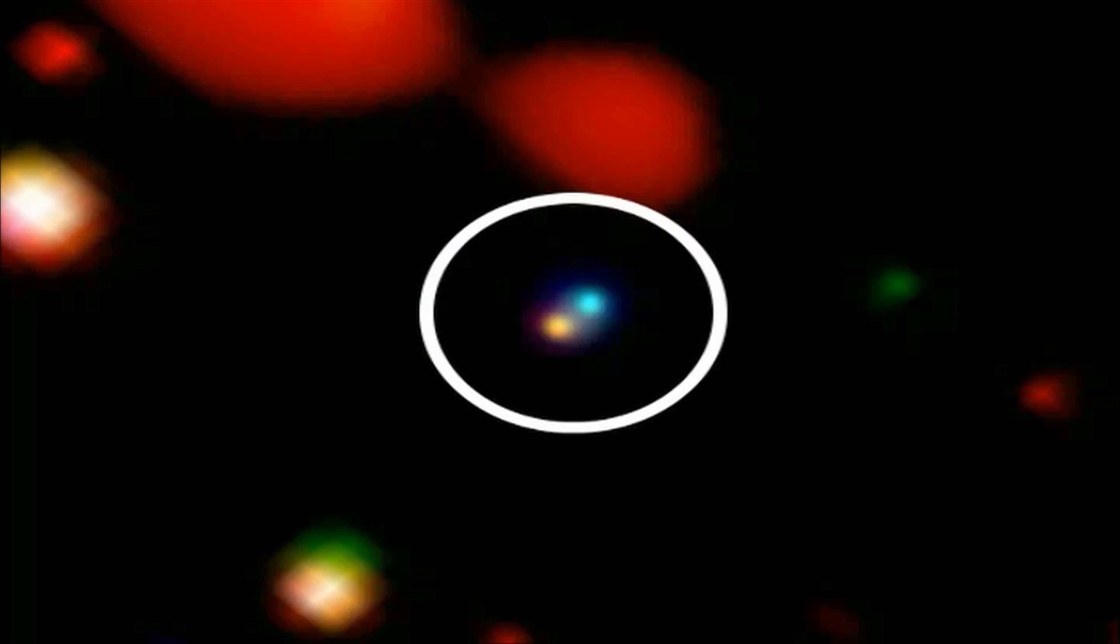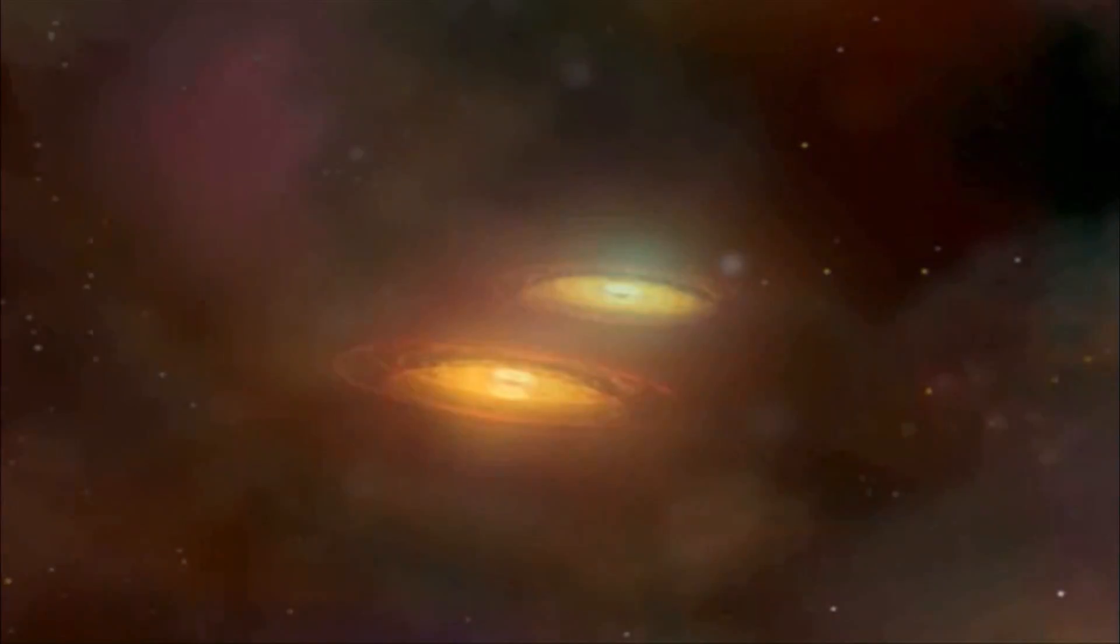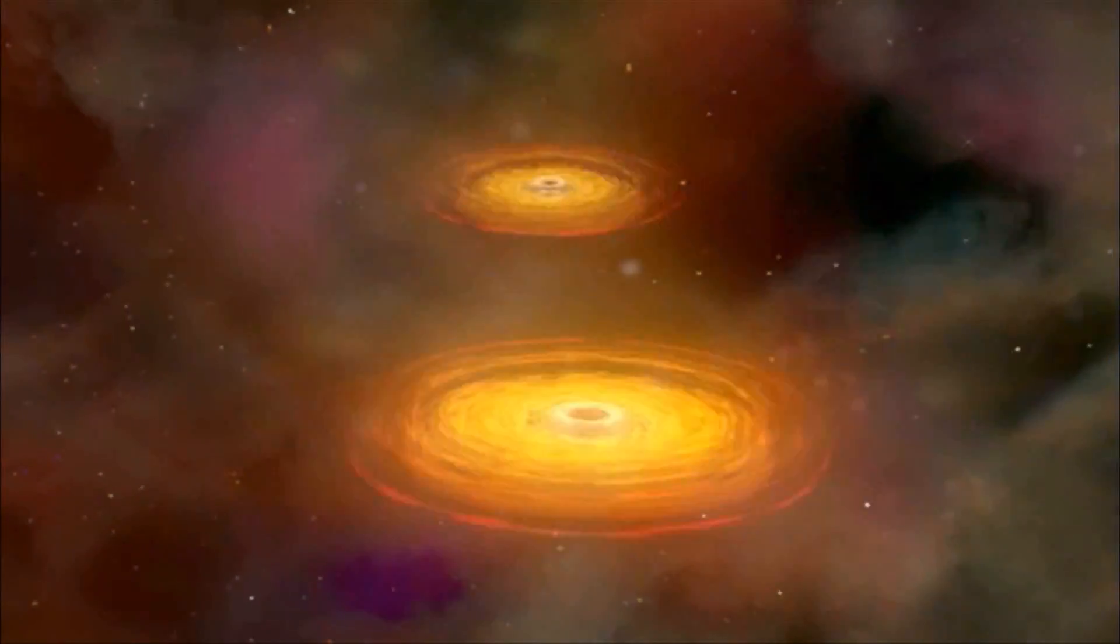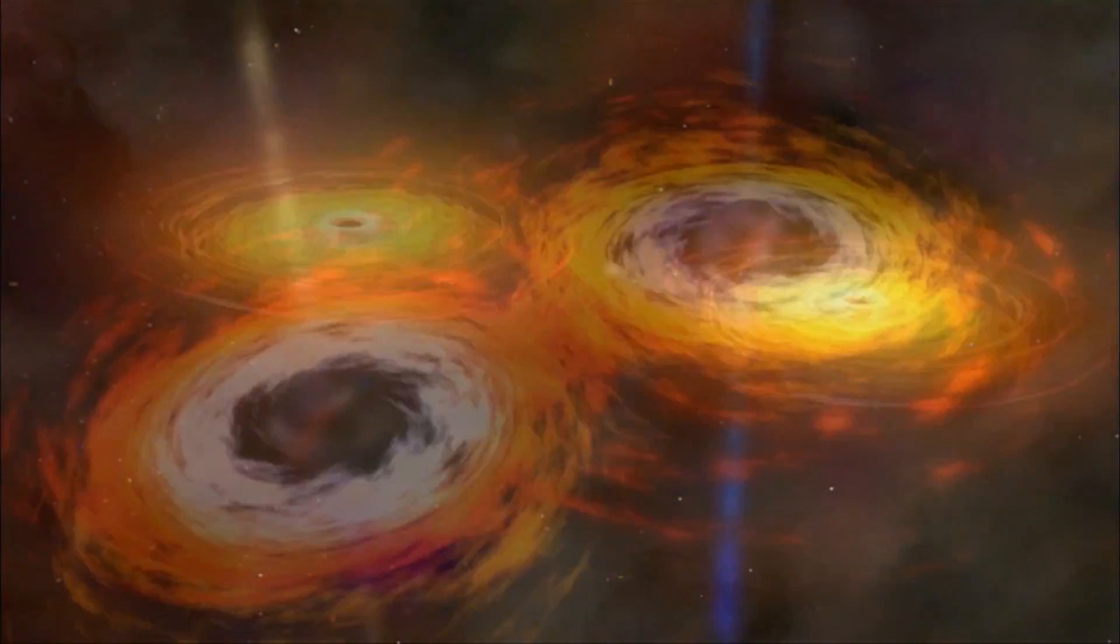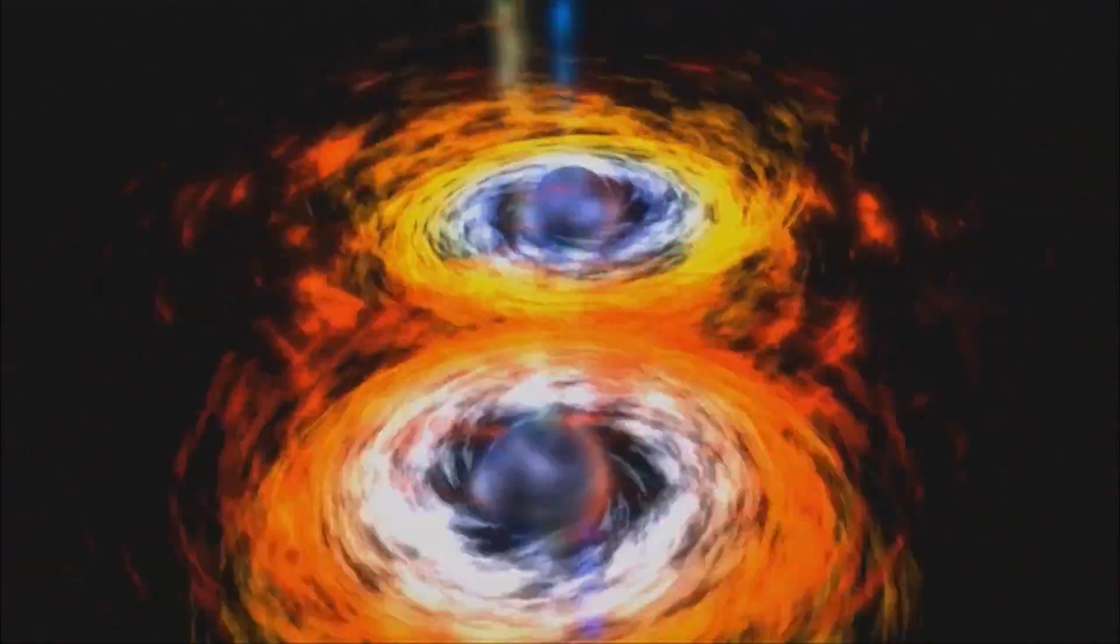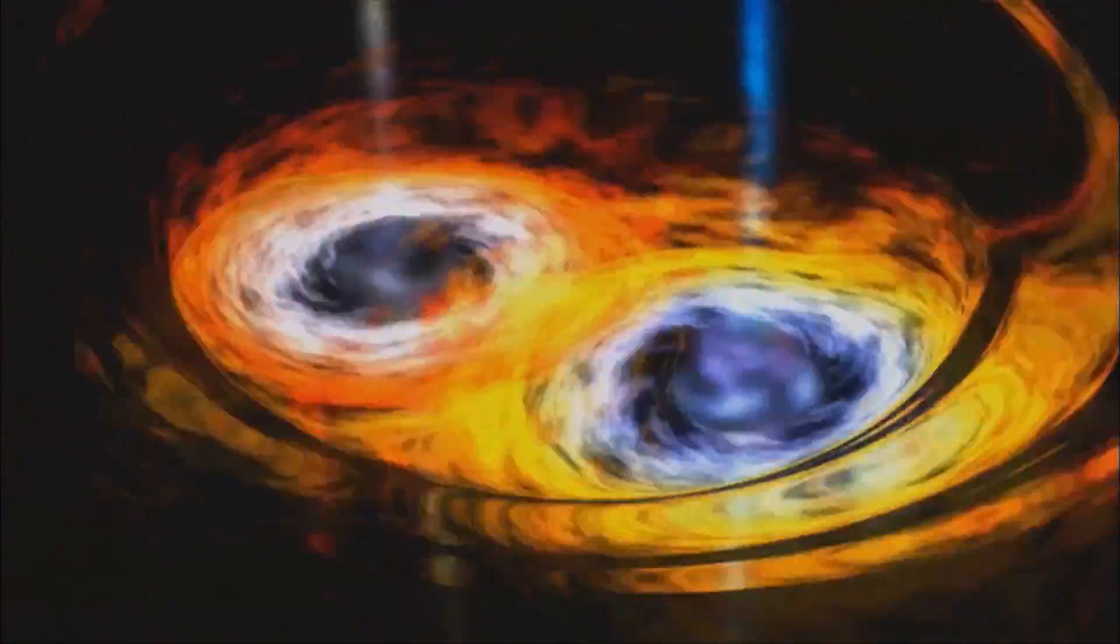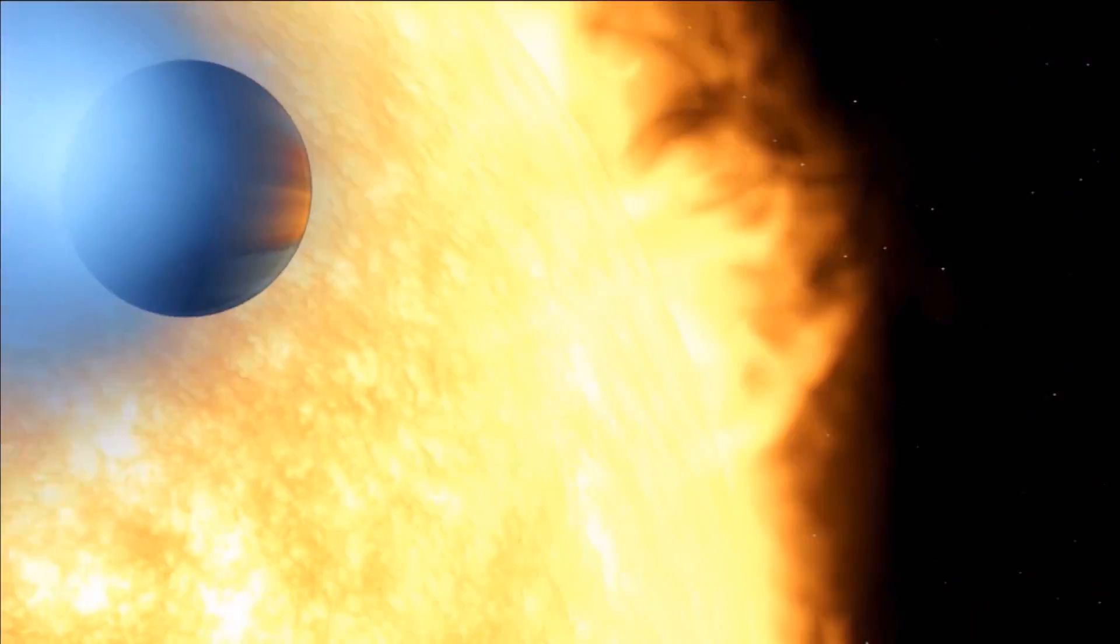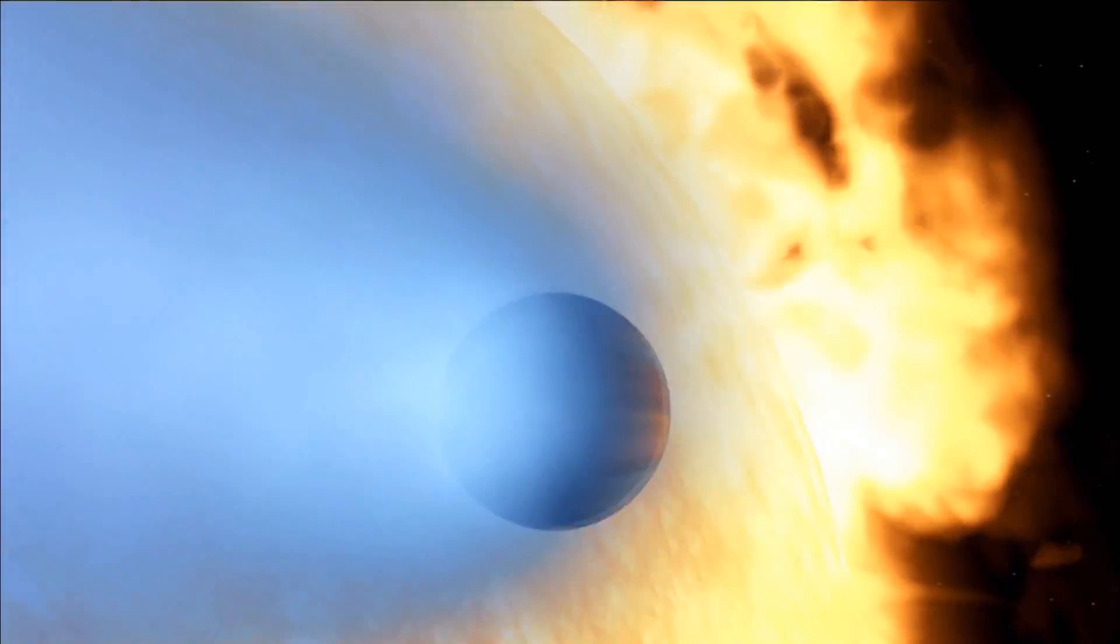Actual supermassive black hole pairs, beginning what astronomers believe is a dance of death. In most cases, their forward momentum simply causes them to go into orbit around each other, like a planet around a sun. This orbit can go on for billions of years.